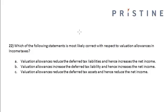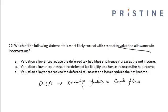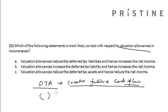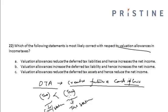Which of the following statements most likely is correct with respect to valuation allowances in the income tax? Deferred tax assets create future cash inflows, because on the financial statement the tax shown is less than the tax shown on the tax statement. In this case, deferred tax assets are created.